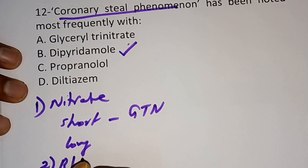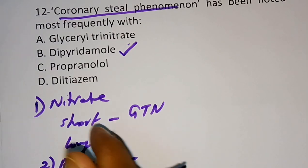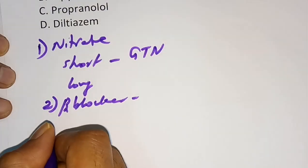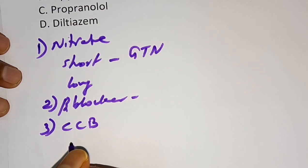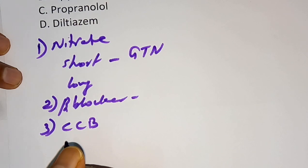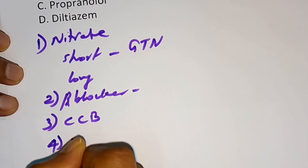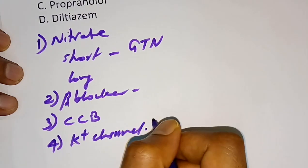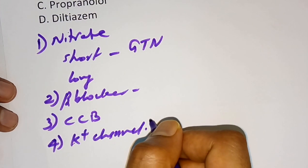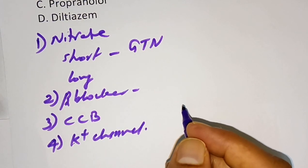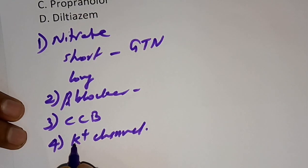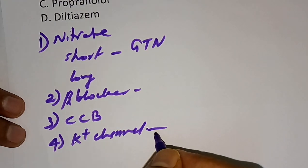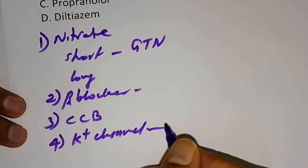Second class: beta blockers — examples are propranolol, metoprolol, and atenolol. Third class: calcium channel blockers (CCB), with three subclasses: phenylalkylamine, benzodiazepine, and dihydropyridine. Fourth class: potassium channel openers — the anti-anginal example is nicorandil. Note that minoxidil is also a potassium channel opener but is mainly used for alopecia, not angina.